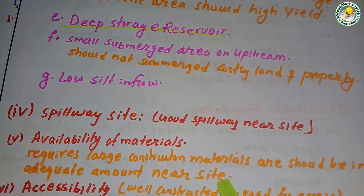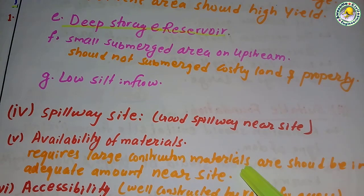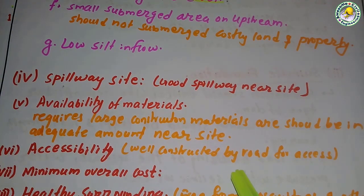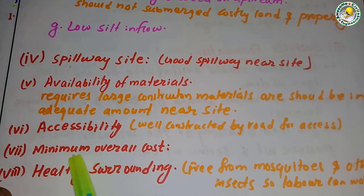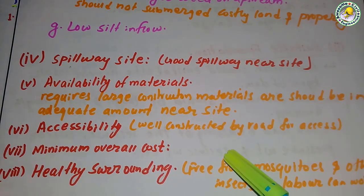Availability of materials: large construction materials should be available in adequate amounts near the dam site. If materials are near the dam site, the cost of the project may be reduced. Accessibility: the site should be well connected by road. Number eight — minimum overall cost, and the surrounding area should be healthy, free from mosquitoes and other insects, so that laborers can work during construction. Thanks for watching — please like, subscribe, and comment.